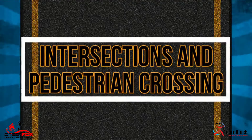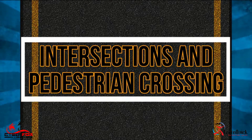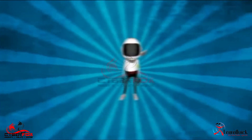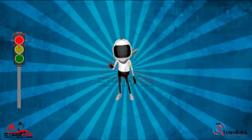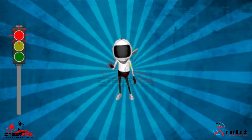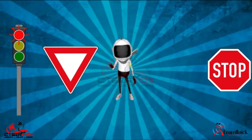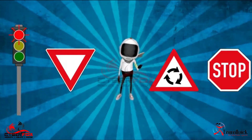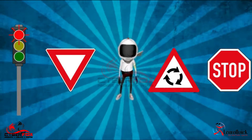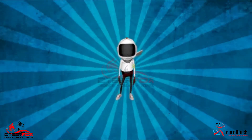Intersections and Pedestrian Crossing. At most intersections you will encounter a robot, a stop sign, a yield sign, or a traffic circle. Each of these requires the correct sequence of checks.